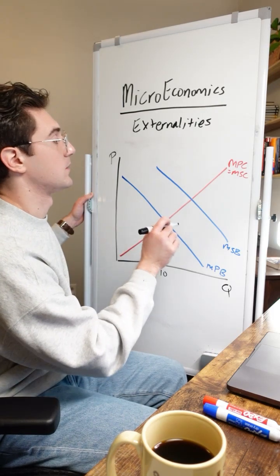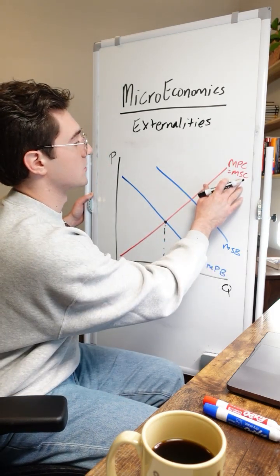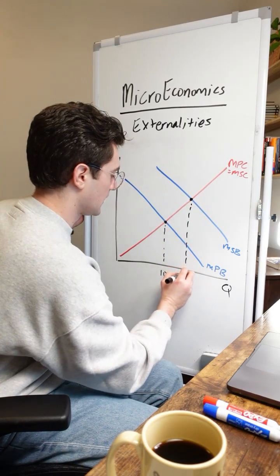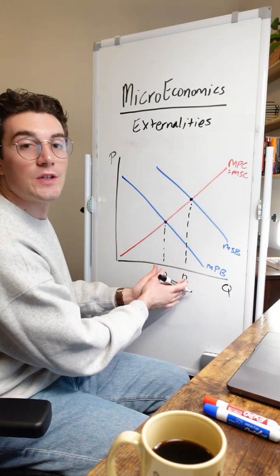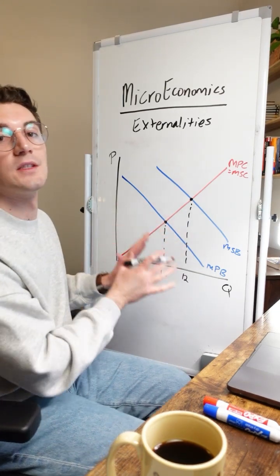Next, let's find the socially optimal output. Look at the intersection of the marginal social benefit and marginal social cost curves. It's going to happen right here at, we'll say, 12 units. Because the socially optimal output is greater than the private market output, this is a positive externality.